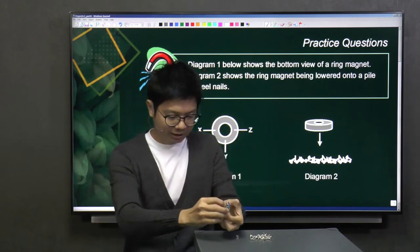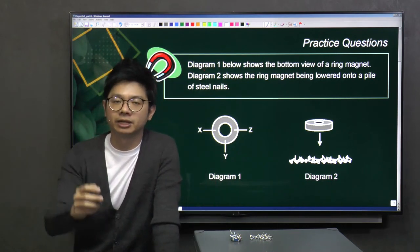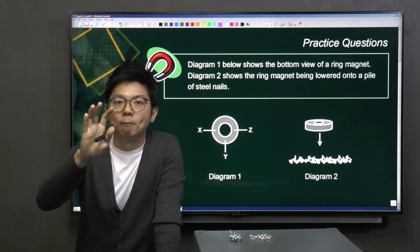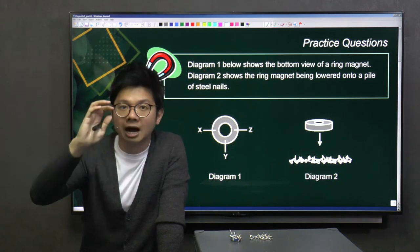Please take note. With that, let me just explain a little bit on ring magnets. It is slightly different from bar magnets because the location or the position of the poles are different.